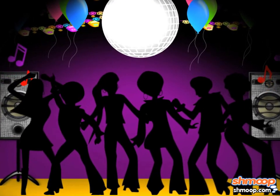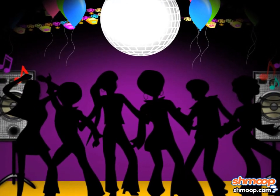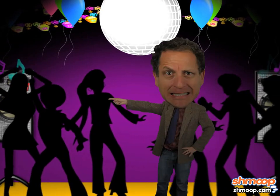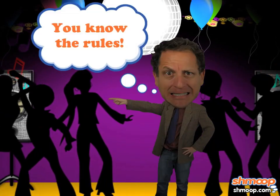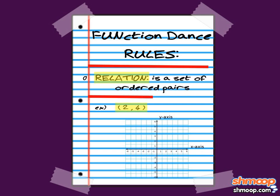Usually, students can dance like relations, which gives them a lot of freedom — maybe too much freedom. You know the rules. A relation is a set of ordered pairs. All we need to do to come up with these ordered pairs is relate X and Y in some way.